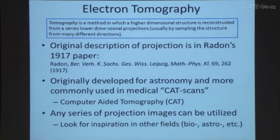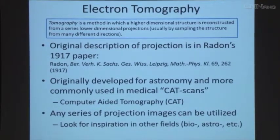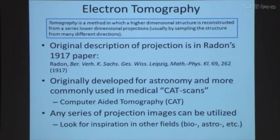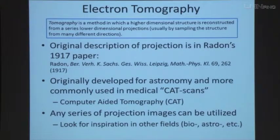Electron tomography is a method in which a higher-dimensional structure — a 3D structure — is reconstructed from a series of lower-dimensional projections, usually by sampling the structure from many different orientations. The original description of this projection problem is in Radon's 1917 paper, originally developed for astronomy so they could figure out how far away objects are, since the Earth goes around the Sun and we can get different projections at different points. It's very commonly used in medical CAT scans, where they put you on a bed, spin a device around you, take different images, and build up a three-dimensional reconstruction. Any series of projection images can be utilized — you can look in biology, astronomy, medical imaging — once you have a projection of a structure.